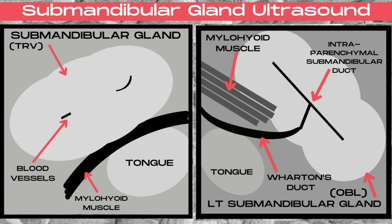Now let's look at the typical appearance of the submandibular gland on ultrasound. The drawing on the left represents a transverse submandibular gland. You'll note that it's slightly lobulated and hypervascular.